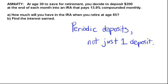Let's look at this example: At age 30 to save for retirement, you decide to deposit $200 at the end of every month into an IRA (Individual Retirement Account) that pays 13.8% compounded monthly. We're being asked: (a) how much will you have in the IRA when you retire at age 65, and (b) how much interest will be earned in this account.